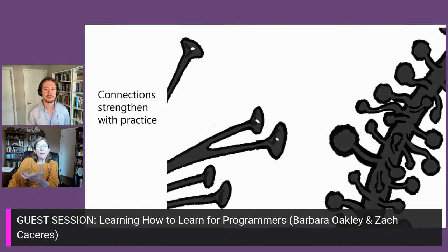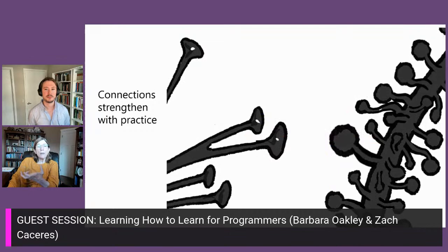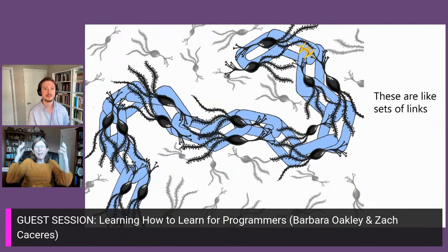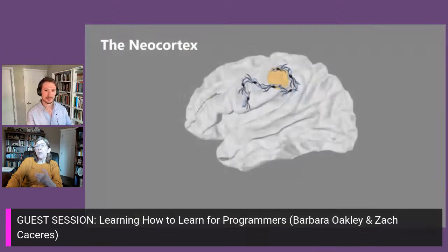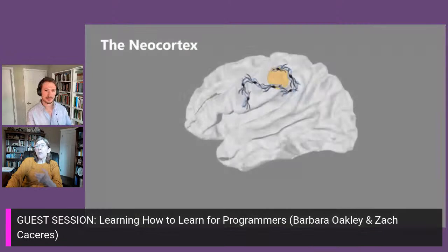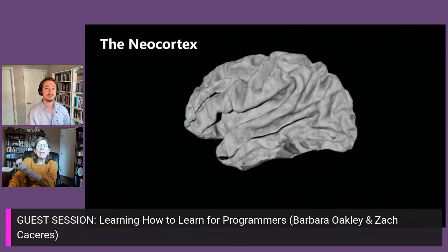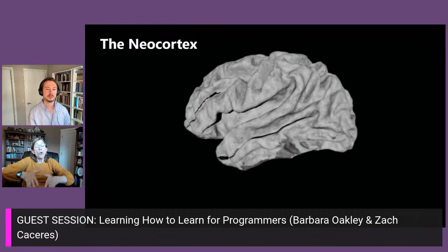We want to help you see tricks to get those links built more rapidly and effectively in your brain. Once you can get them in there, you can practice with them and strengthen them. When you've got a nice strong set of neural links, you can easily pull them to mind when you want to work with them. The neocortex — those sets of links — are embedded in a thin layer at the edges of your brain, about two millimeters thick.